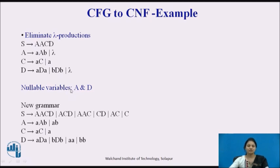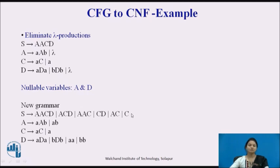Now we define the new grammar after null replacement. For S producing AACDA: when A is set to null we get ACD; again setting another A to null gives ACD; setting D to null gives AAC; setting both A's to null gives CD; and setting A and D both to null leaves only C.